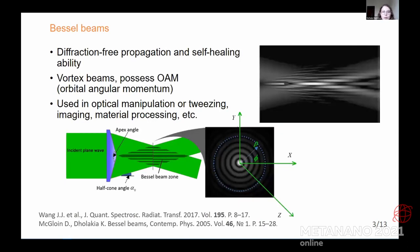Bessel beams are probably one of the most famous examples of structured light that have lots of special features such as diffraction-free propagation and self-healing ability. Also, such beams are vortex beams, so they possess orbital angular momentum, and they have lots of applications in such fields as optical manipulation or tweezing, material processing, imaging, and many others.